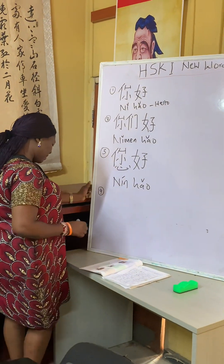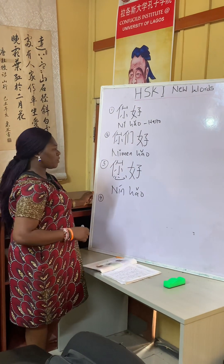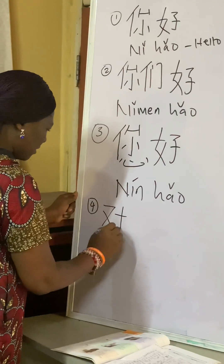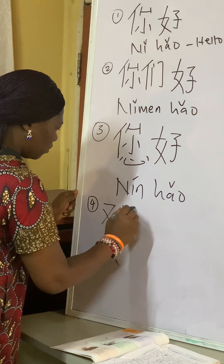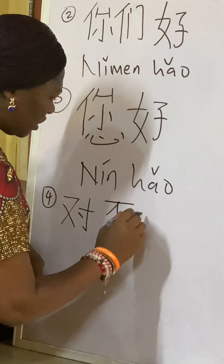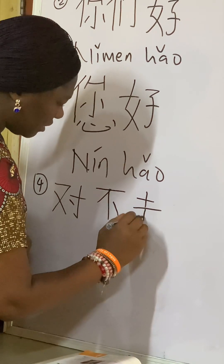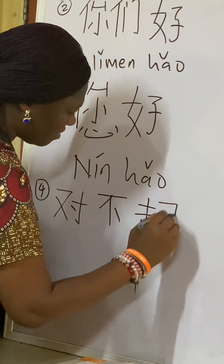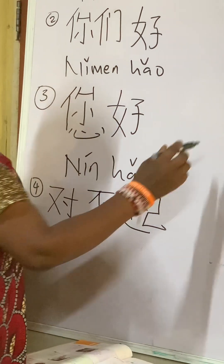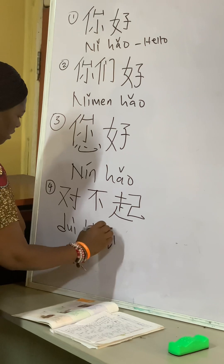Number four in HSK 1 Chapter 1 is 对不起 (duì bu qǐ). When writing 对 (duì), first you write 又 (yòu), then add this stroke. Then 不 (bù) means no or not. Then 起 (qǐ) — when writing 起 (qǐ), first you write 走 (zǒu).